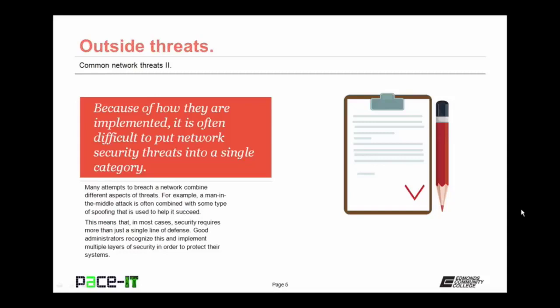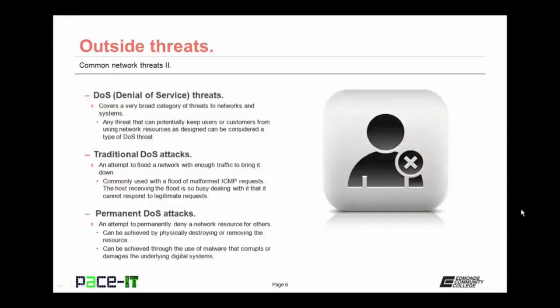The first major threat we're going to talk about is the denial of service threat, or the DOS threat. This covers a very broad category of threats to networks and systems, because DOS covers any threat that can potentially keep users or customers from using network resources as designed. A traditional DOS attack attempts to flood a network with enough traffic to bring it down. It's commonly used with a flood of malformed ICMP requests. The host that receives the flood can be so busy dealing with the deluge of data that it cannot respond to legitimate requests.